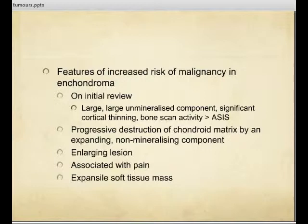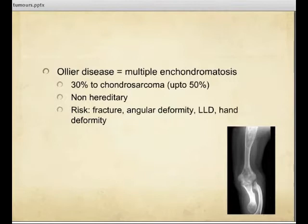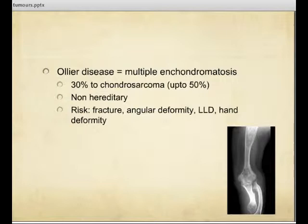Ollier's disease refers to multiple endochondromatosis and has a 30% risk of progression to chondrosarcoma. It presents with multiple enchondromas throughout the body, with other risks including fractures, angular deformity, and leg length discrepancy. Maffucci syndrome refers to a condition with multiple enchondromas as well as angiomas, with up to 30% risk of transformation to chondrosarcoma, but also a risk of multiple other malignancies — the overall tumour risk is quoted as 100%.